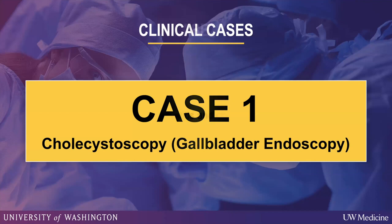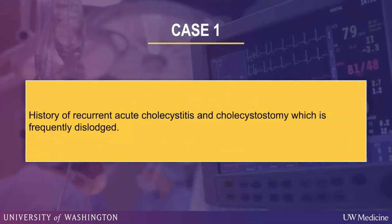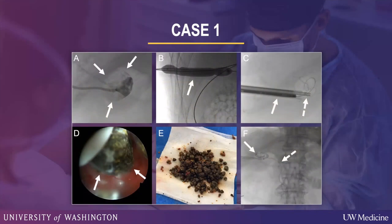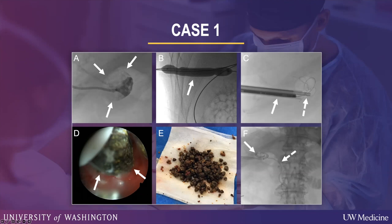This is cholecystoscopy or gallbladder endoscopy. The standard patient has recurrent cholecystitis, a gallbladder tube in place, and essentially has to have this tube for life. We can help these patients get their gallstones out and remove the tube. You can see gallstones in the gallbladder and a cholecystostomy. We remove the tube over a wire, dilate the track with the BARD X-Force balloon, then place a Teflon or metal cannula into the gallbladder and use the 22.5 French rigid endoscope to visualize and remove stones with baskets or graspers. Afterwards we can place a transcystic drain into the duodenum, which is subsequently removed.